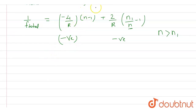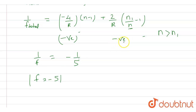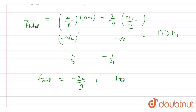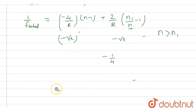Let's use a simple numerical example. Suppose without the material the combination focal length came out as −1/5, so the focal length is −5. Suppose the material gives an additional value of −1/4. Adding them: 1/f_total = −1/5 + (−1/4) = −9/20, giving f_total = −20/9. Without the material the magnitude was 5, but with the material it is 20/9, which is smaller.